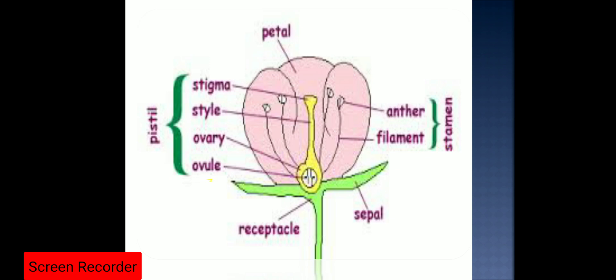The last, innermost whorl of the flower is the gynoecium, and the unit of the gynoecium is the pistil. The pistil has three basic parts: the stigma, style, and ovary. Inside the ovary there are ovules, and the ovules contain the female cell — the egg cell or ovum — which will take part in the process of fertilization.